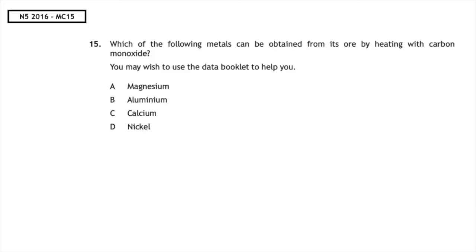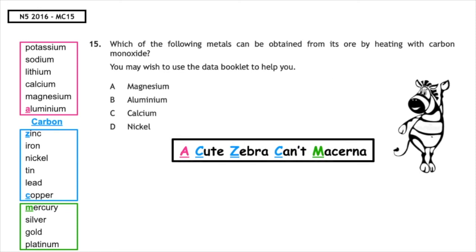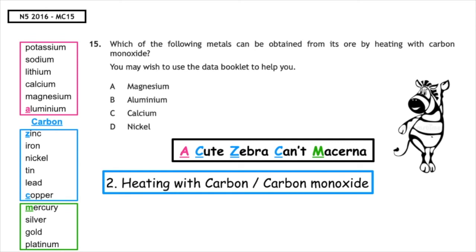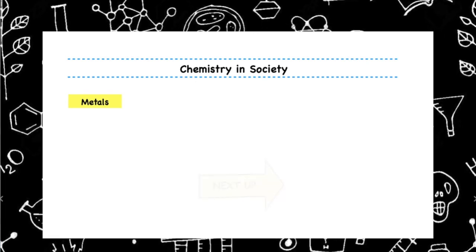This past paper question is from the National 5 2016 multiple choice 15. Which of the following metals can be obtained from its ore by heating with carbon monoxide? You may wish to use your data booklet to help you. Remember, acute zebra can't macarena. We're looking between copper and zinc to be using heating with carbon or carbon monoxide, and the only metal that can be found in this section is nickel. Multiple choice answer D.